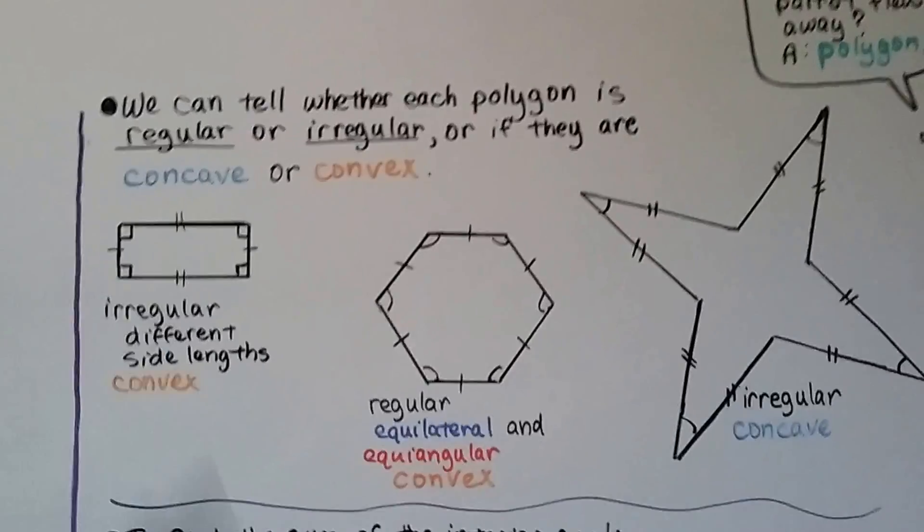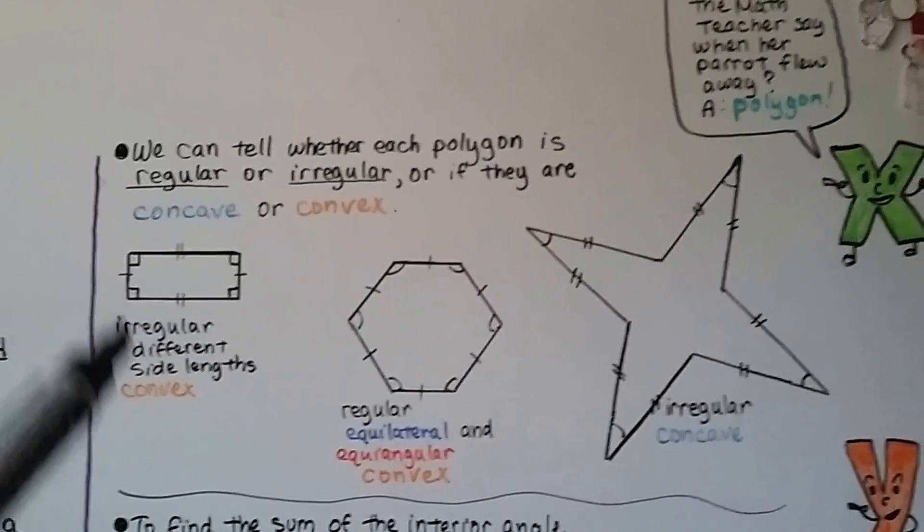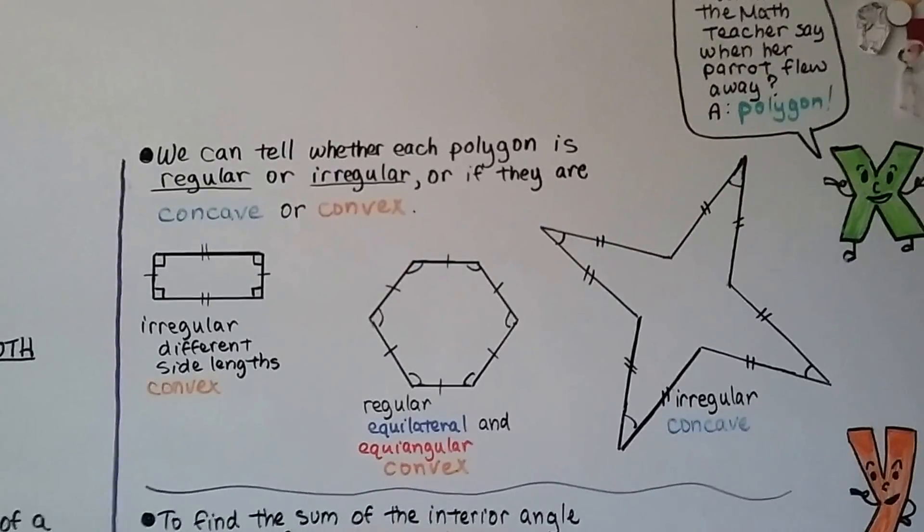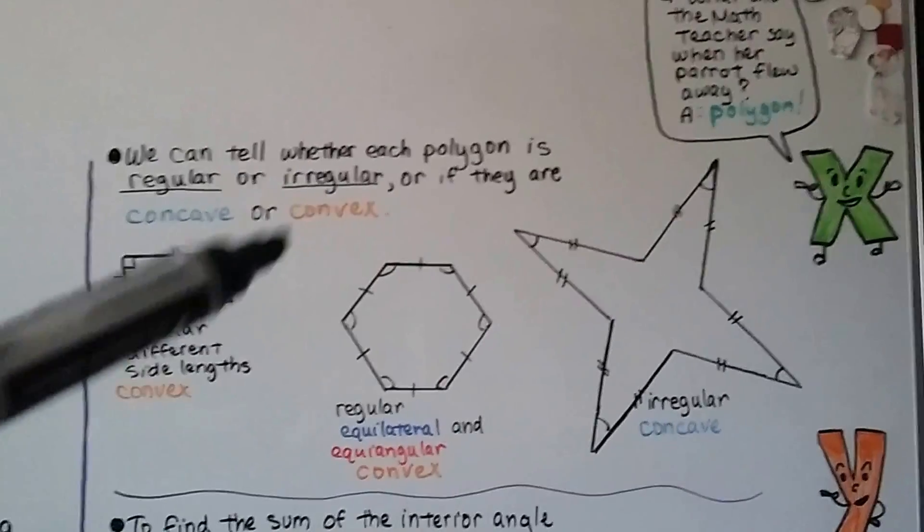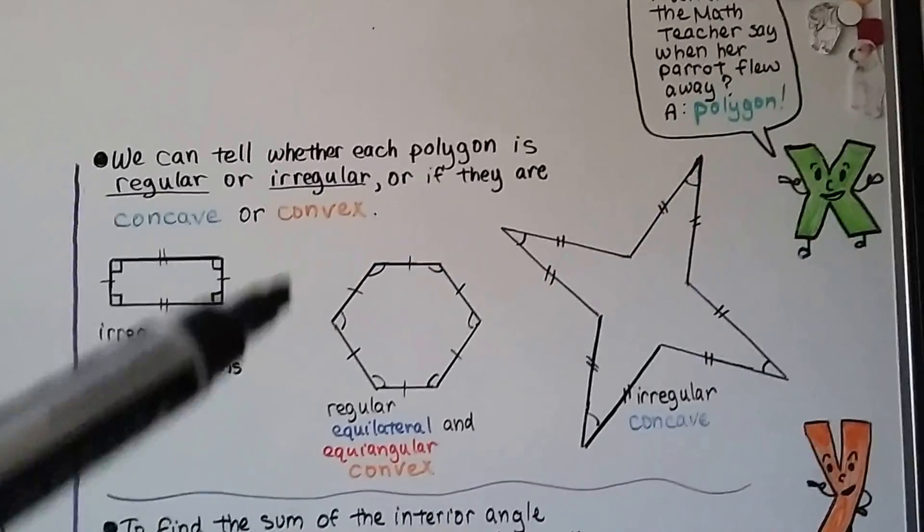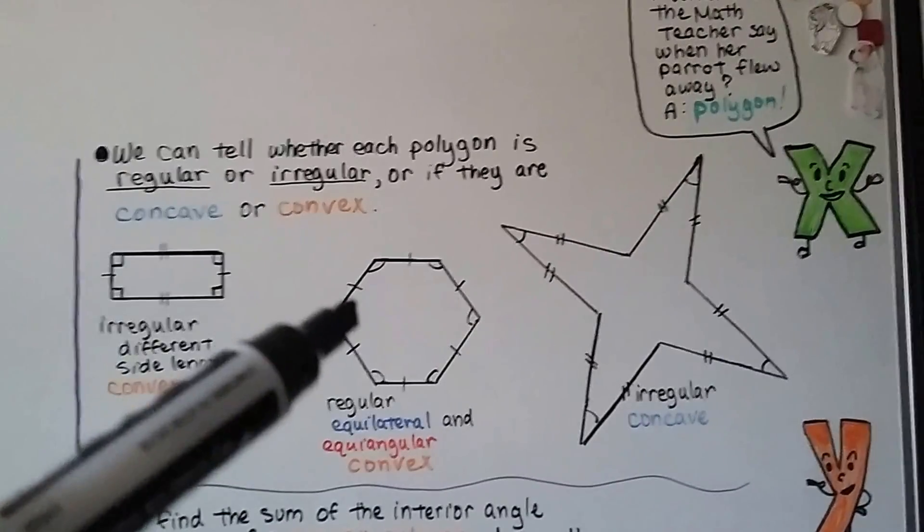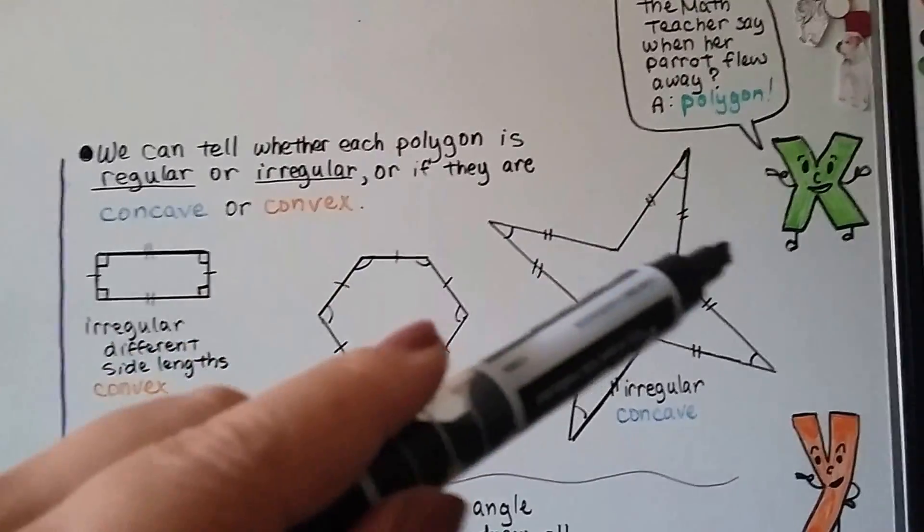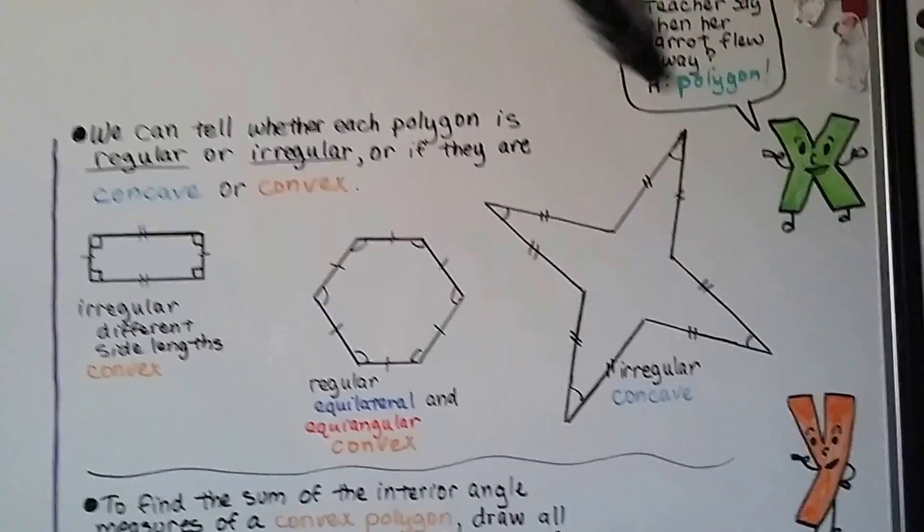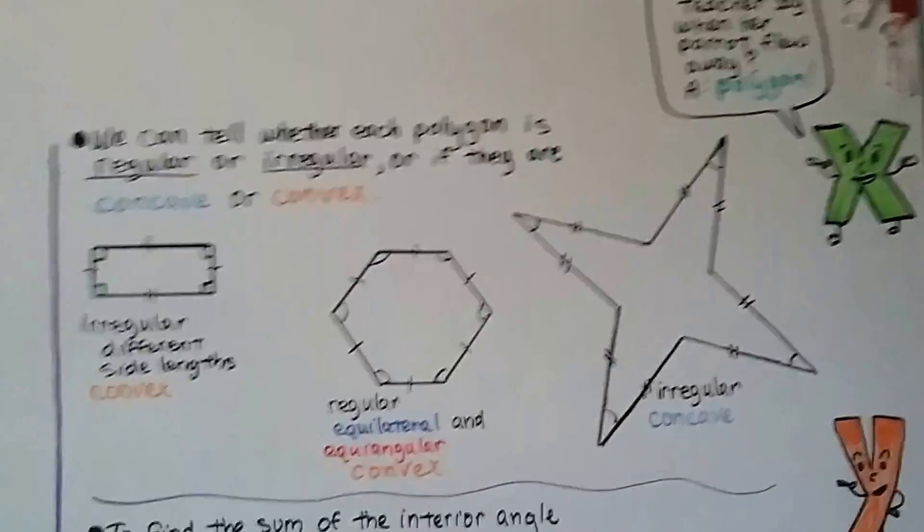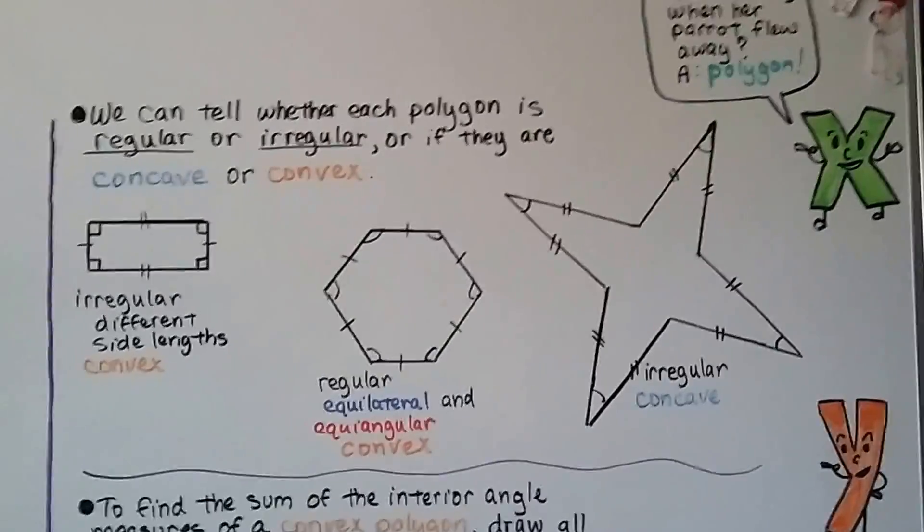Here we have a rectangle. The diagonals would be on the inside. It's got different side lengths, so it's irregular and it's convex. This one is a regular polygon. It's equilateral and equiangular and it's convex. This one is concave here, this is concave, this is concave, this is concave. We could put a diagonal across here, across here, across here, and across here. So it's irregular and concave.